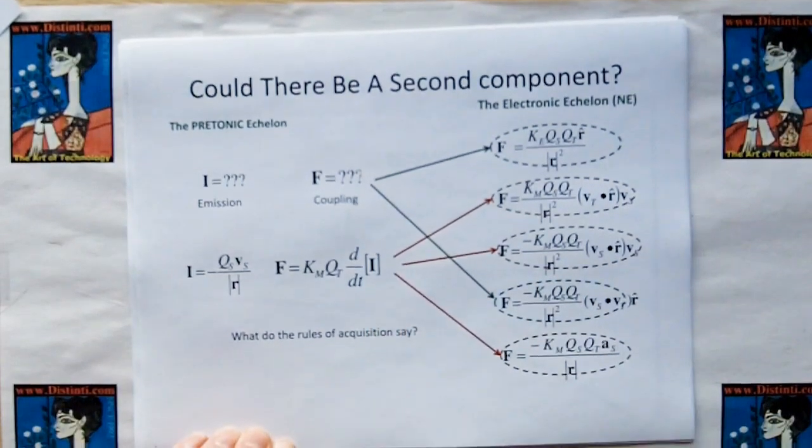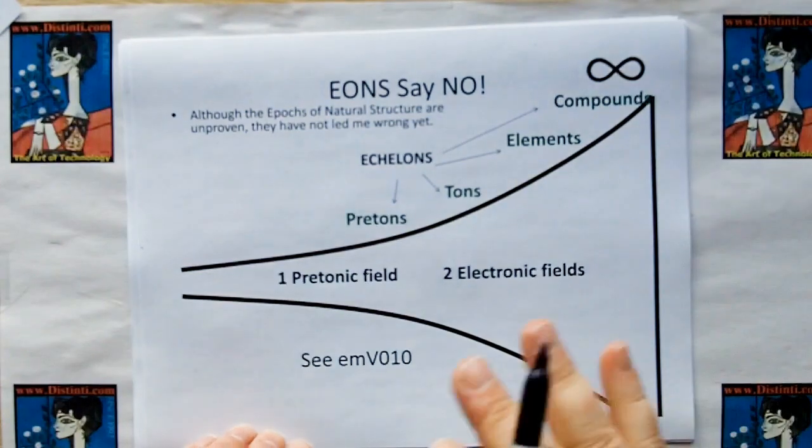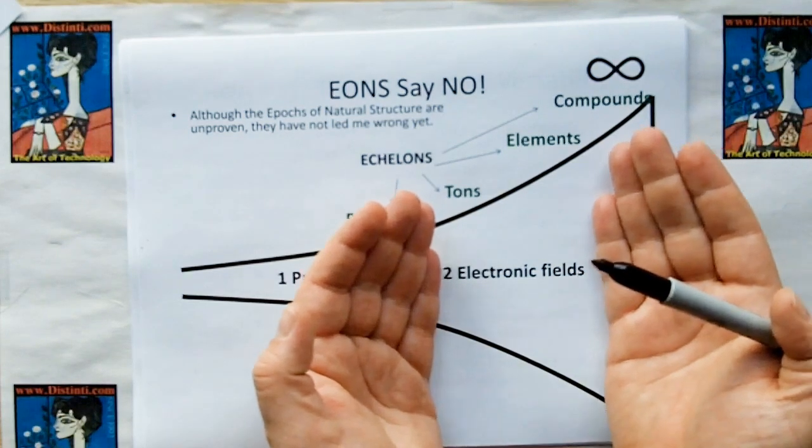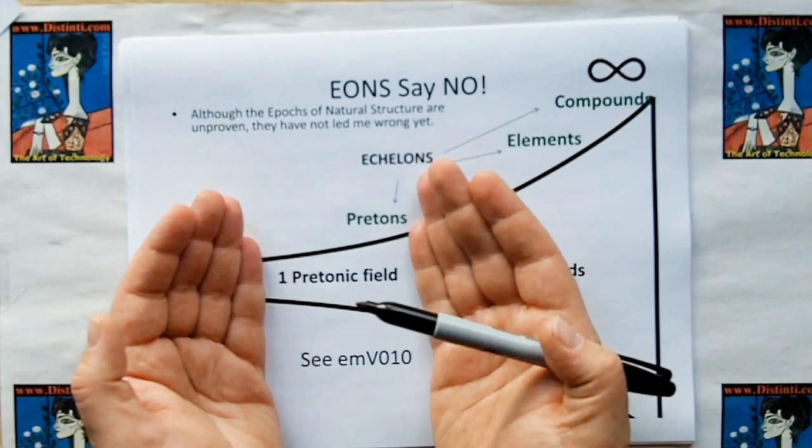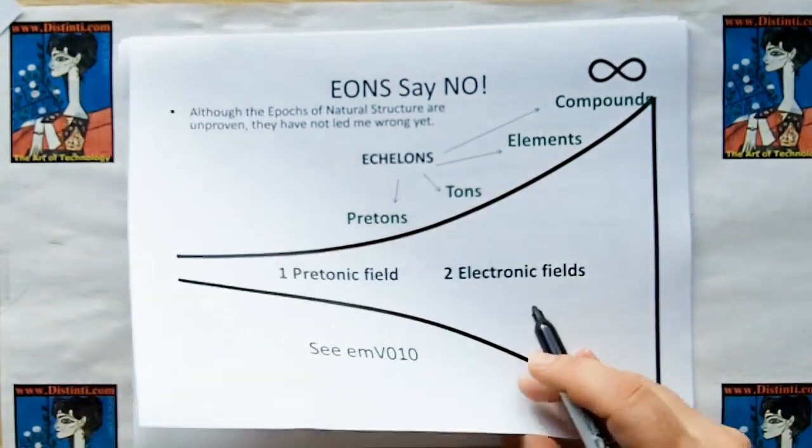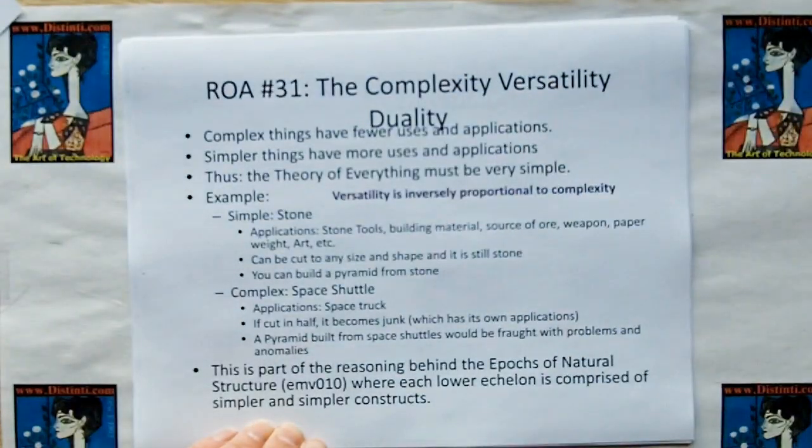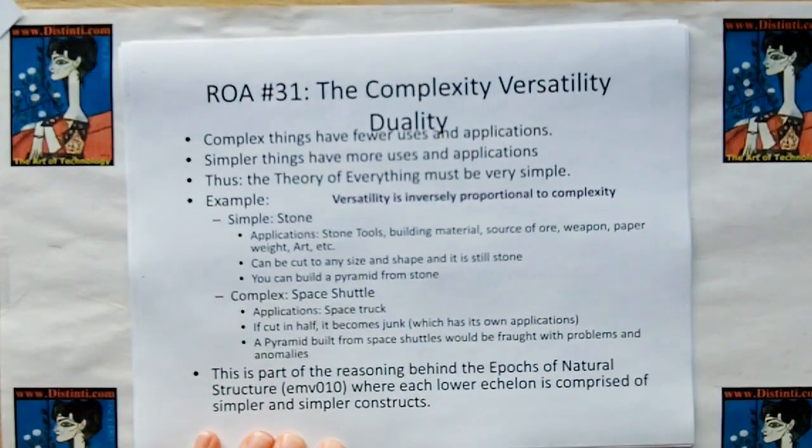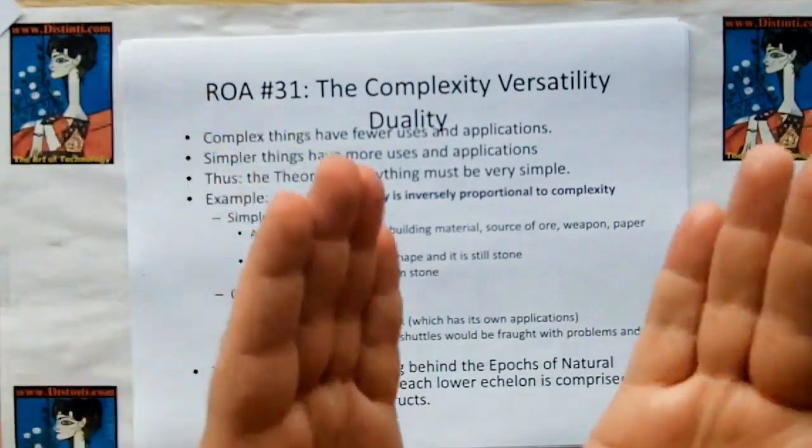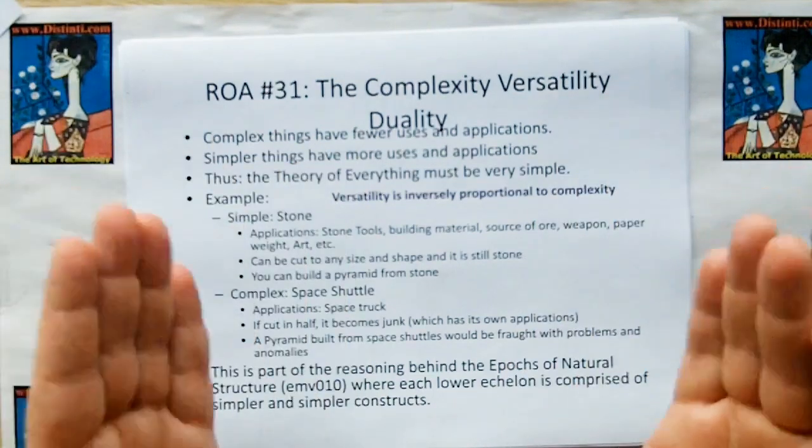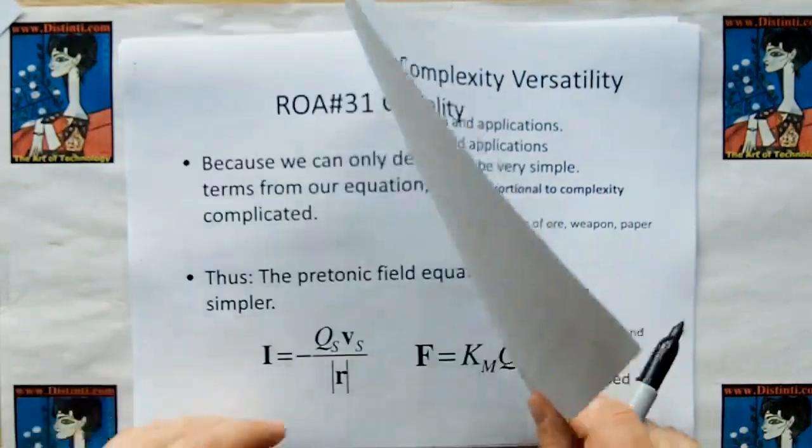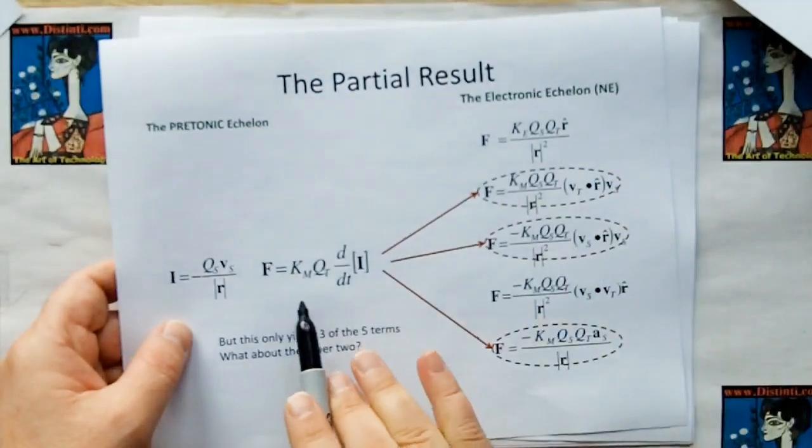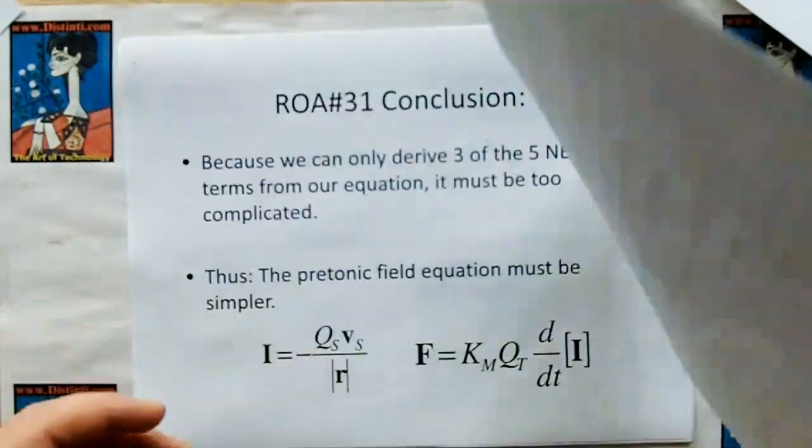So we have a partial result now. We have a guess. We made a guess. And that guess, when we derive the other way, we only get three of the five terms. What about the other two? Well, could there be a second component that we could derive? Well, the rules of acquisition, especially the epochs of Mother Nature or natural structures, say no, because if you get two tonic fields, the electric and magnetic fields, then as we go down the cornucopia of the epoch, you should only have one pretonic field, and that, my friend, is your unified field. And therefore, we have to resort to rule of acquisition number 31, which is the complexity-versatility duality, which, I've got to find a better name for this, but essentially what it means is, in order to explain more stuff, your models have to be simpler. And logically, the theory of everything should be ridiculously simple. So, in order to explain these other terms here, this needs to be simpler.